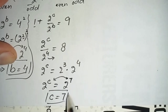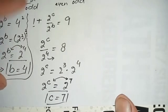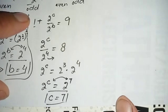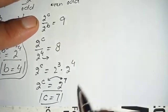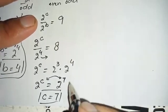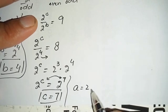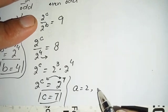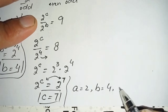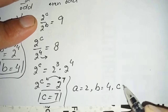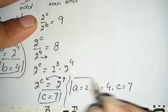So finally we have found all three values: a equals 2, b equals 4, and c equals 7. This is our complete solution for this problem.